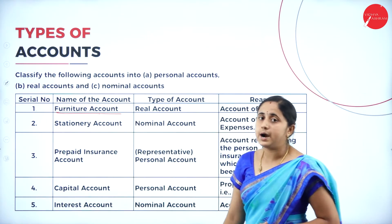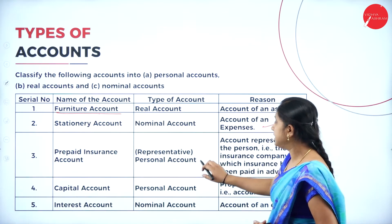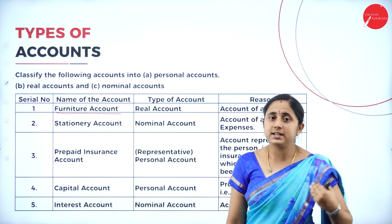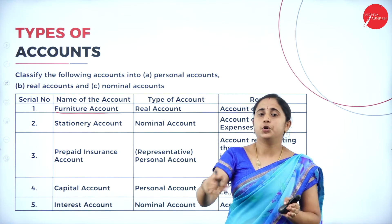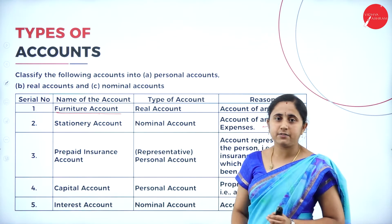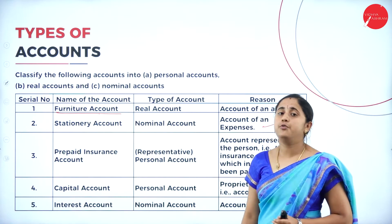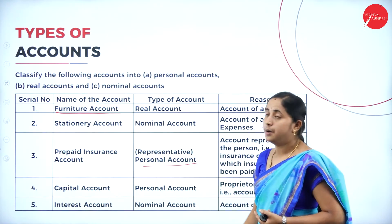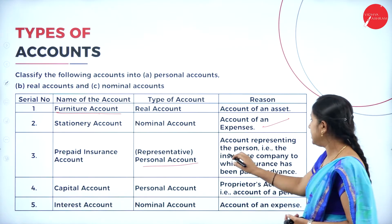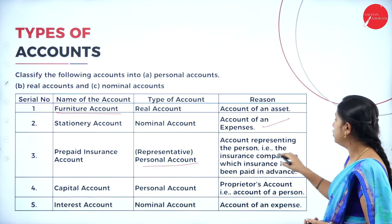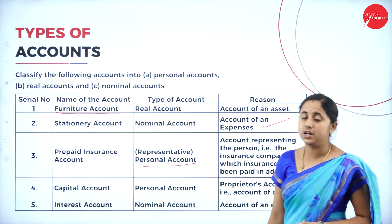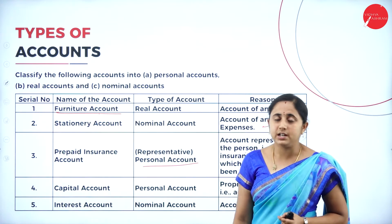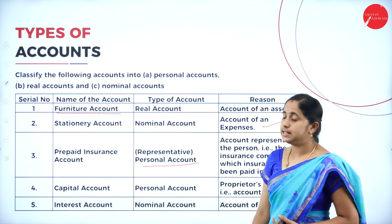Then prepaid insurance account. Prepaid insurance account is a representative person account. Insurance means you are paying insurance to represent a person — for the individual, you are going to pay the insurance. So it is a representative of a person. Person means individual, and person comes under personal account. So prepaid insurance is considered as personal account.